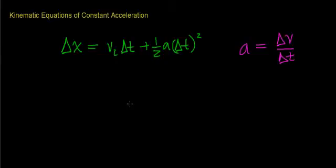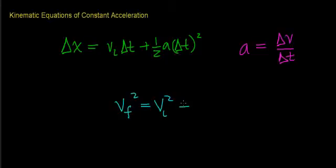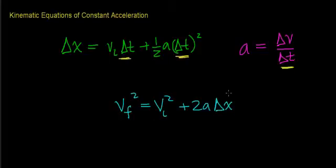In this video, what we're going to do is derive the following kinematic equation that eliminates the need to consider the time parameter. This equation says the final velocity squared equals the initial velocity squared, plus two times the acceleration times the change in distance. What this equation does, and why it's useful, is it eliminates the time parameter out of both of these equations.